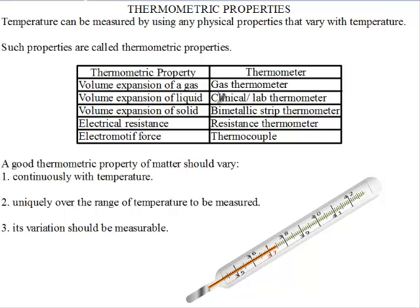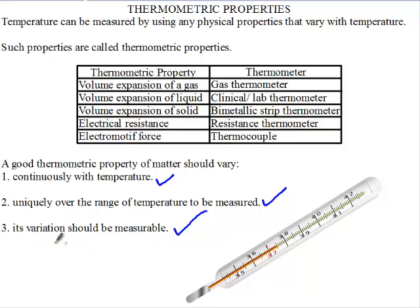So, these are the thermometric properties and the thermometers that use them. A thermometric substance should meet three criteria: one, it should vary continuously with temperature; two, it should vary uniquely over the range to be measured; and three, it should be very sensitive so that its variation is measurable.